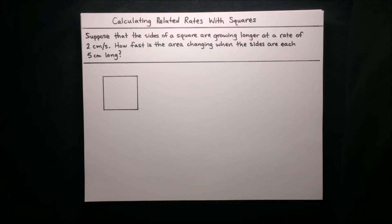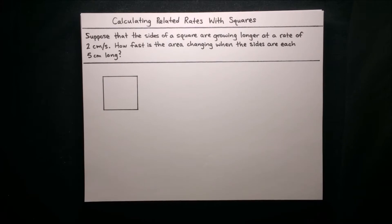In this video, I'm going to show you how to calculate related rates with squares. We suppose that the sides of a square are growing longer at a rate of 2 centimeters per second. We want to figure out how fast the area is changing when the sides are each 5 centimeters long.